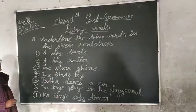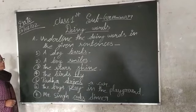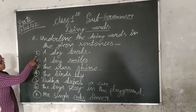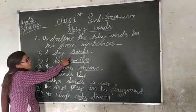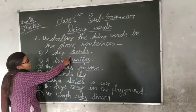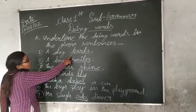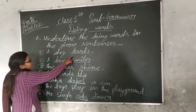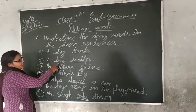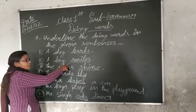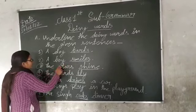You can easily see on the board. First, in the box — box is a doing word. Second, a guard, smile — smile is a doing word.